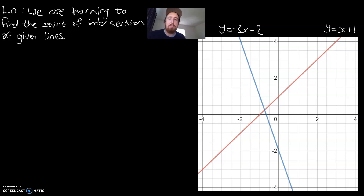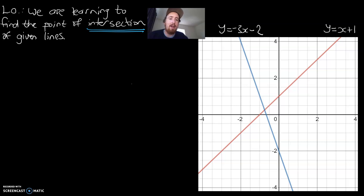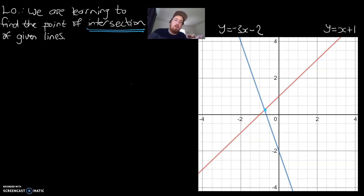Hey guys, Mr. Bowman here. Today's learning objective is to find the point of intersection of given lines. The key thing is that word intersection. The point of intersection is the point at which two lines cross each other. If you think of two roads, an intersection is when two roads, two paths, or two equations cross each other, and that exact point is the point of intersection.